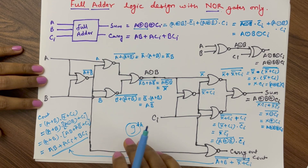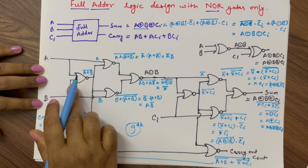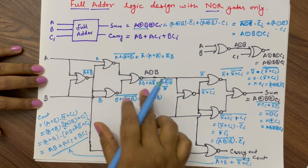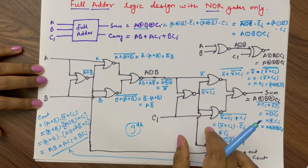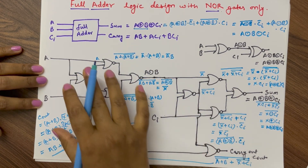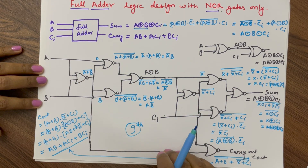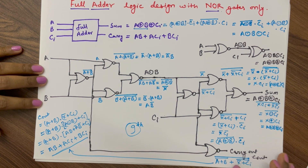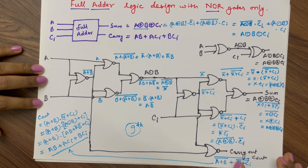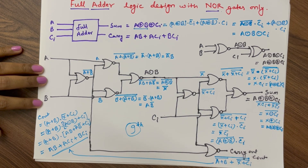We need 9 two-input NOR gates for designing a full adder. I hope this video is helpful to you. Thank you.